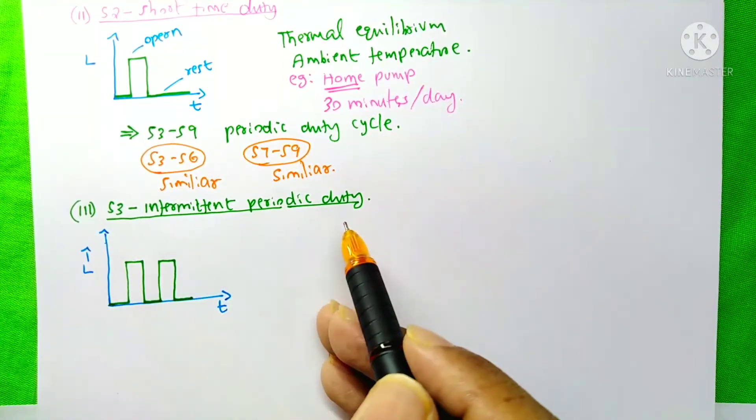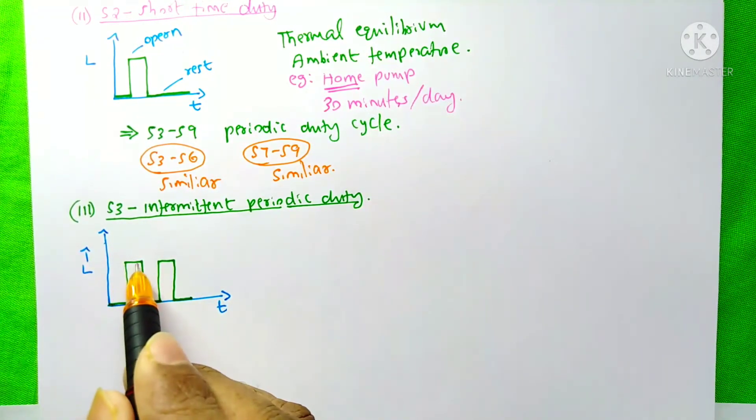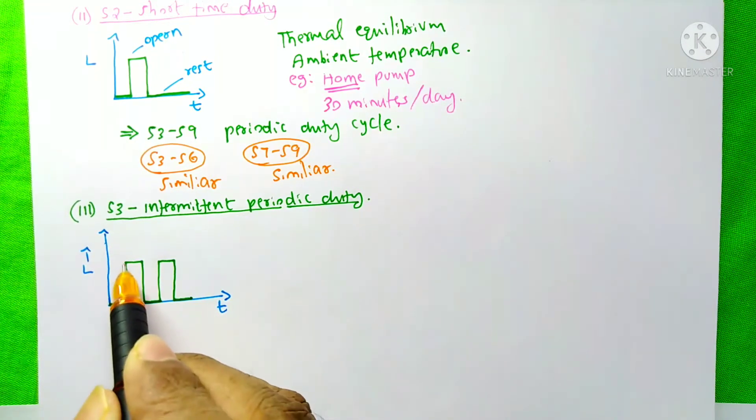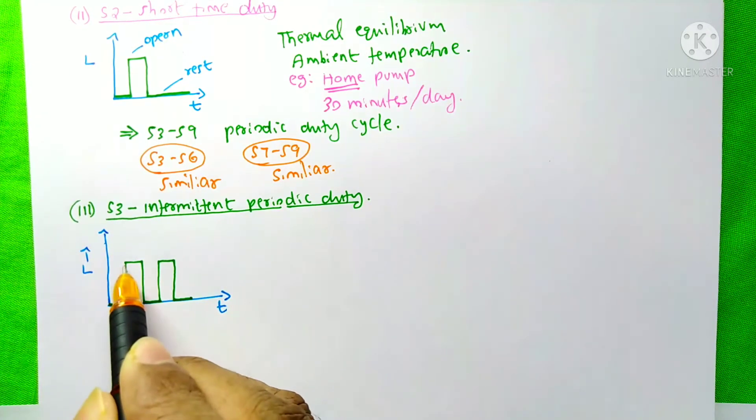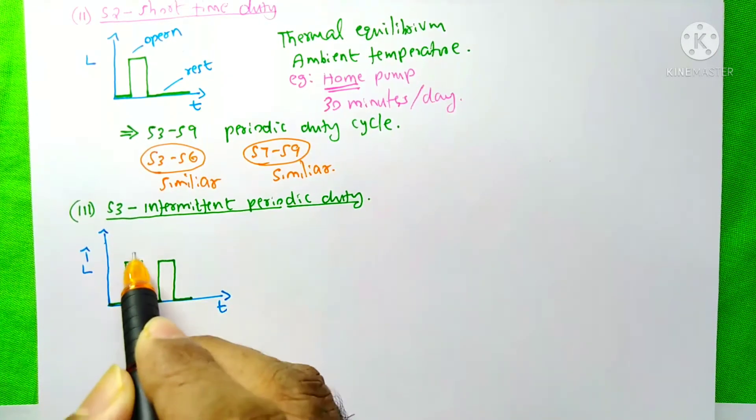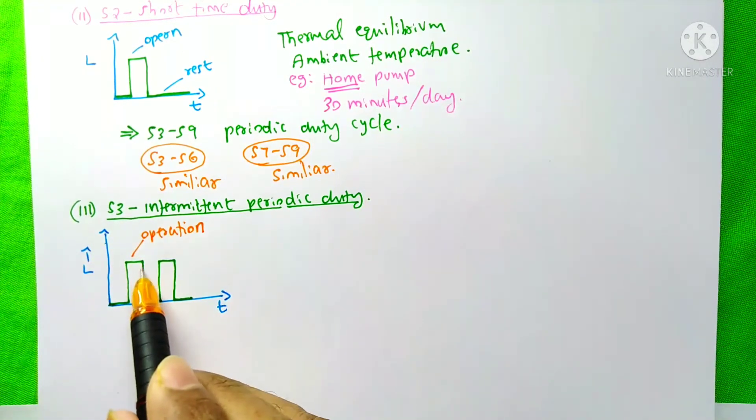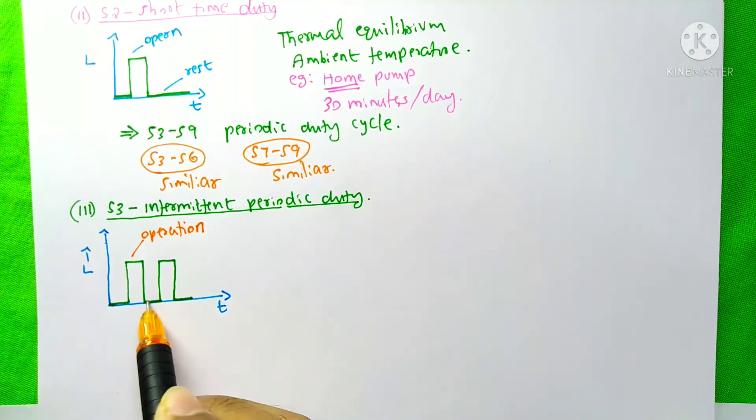And you can see, here also the load is constant. After the motor starts, the motor reaches its maximum load and then it will be on for a short time. It is the operation time. And after that, the motor will be switched off and then rest for a certain period.